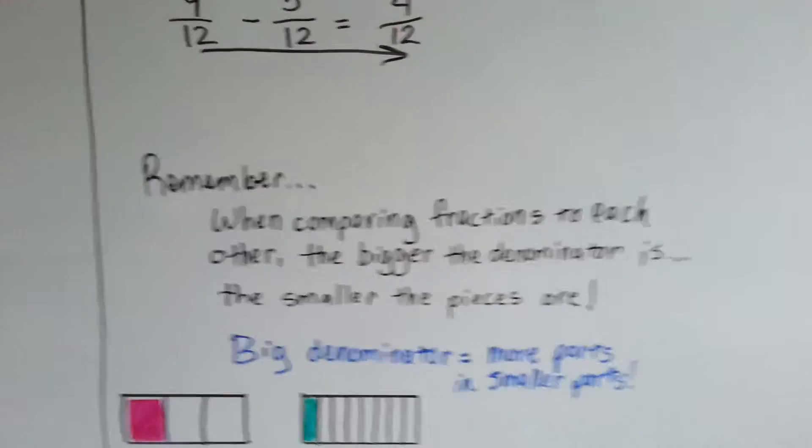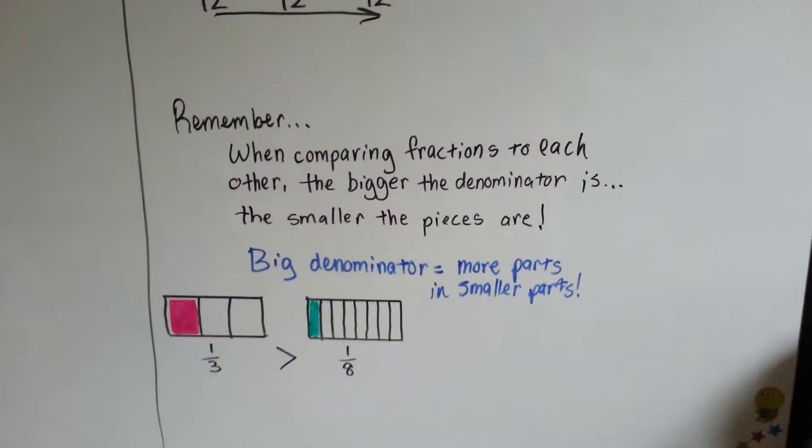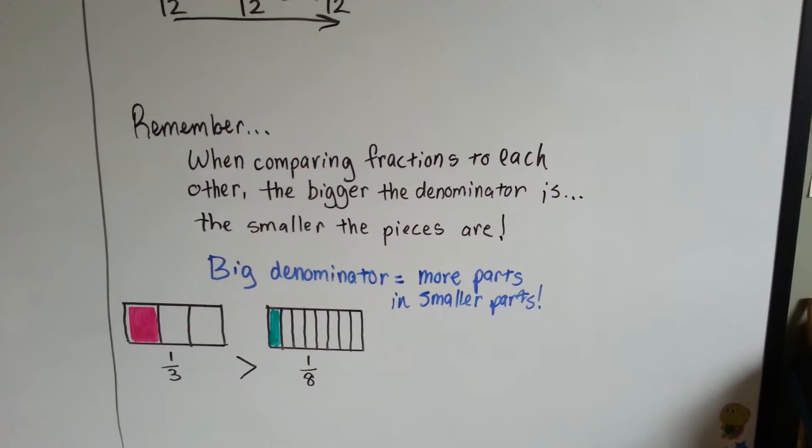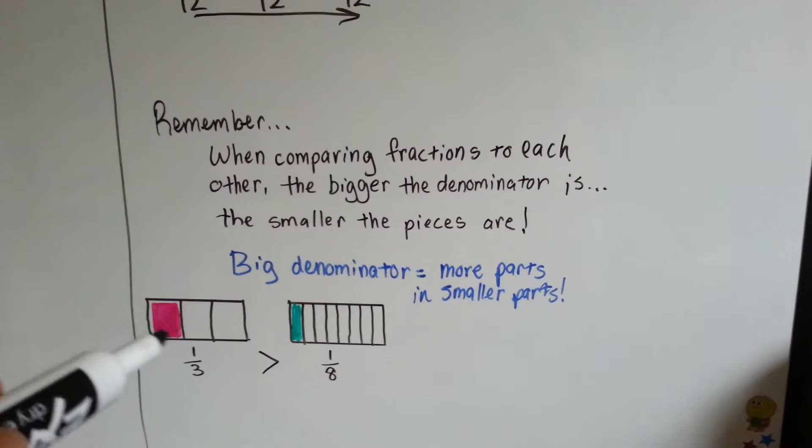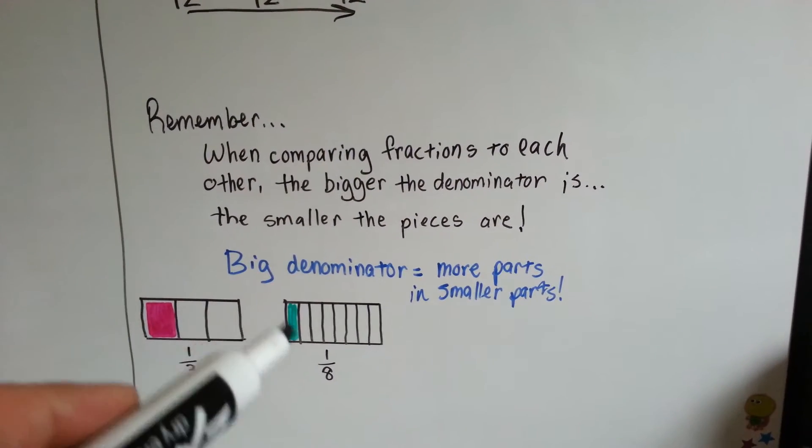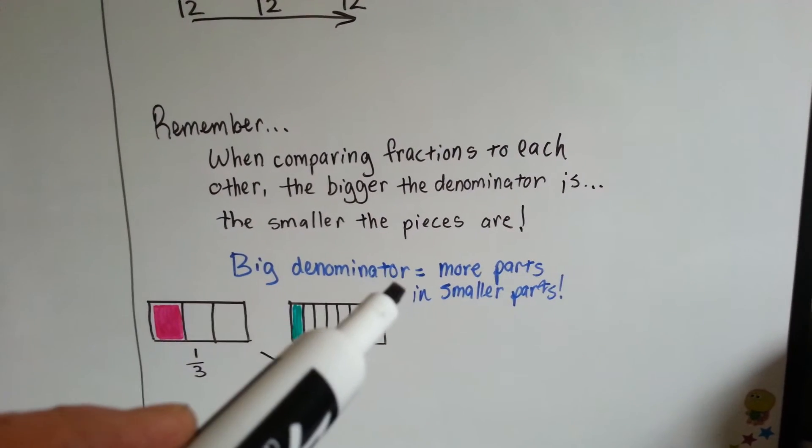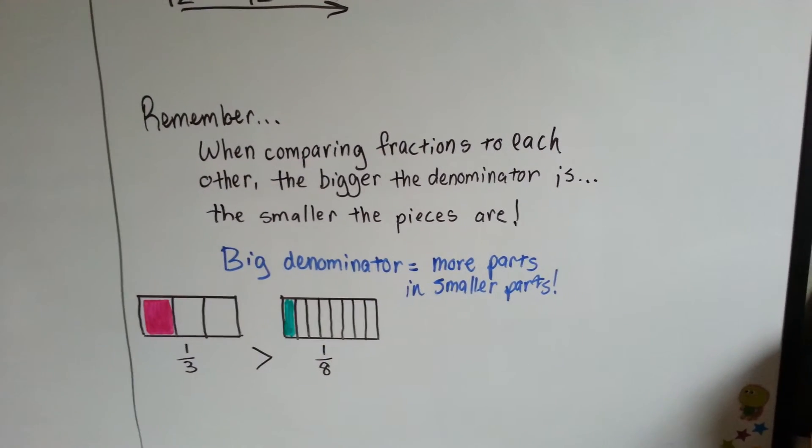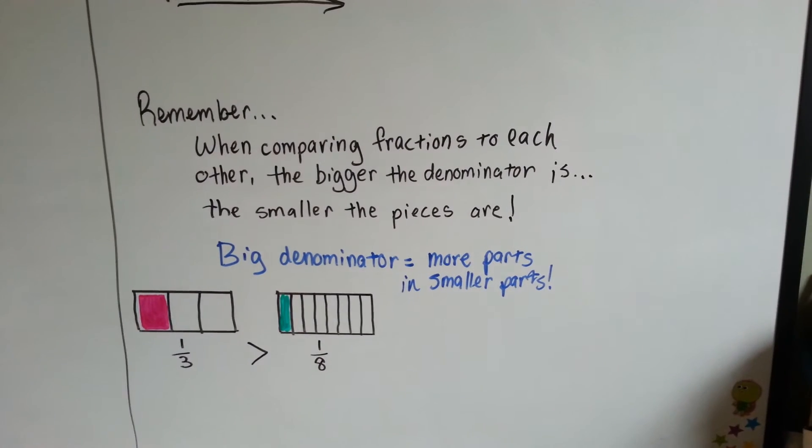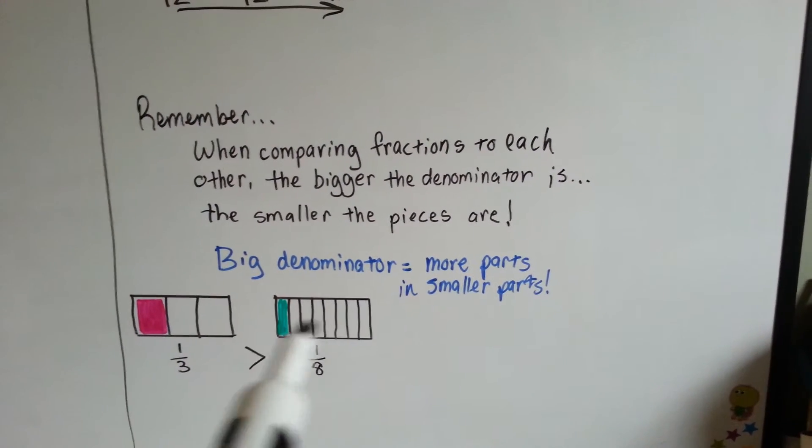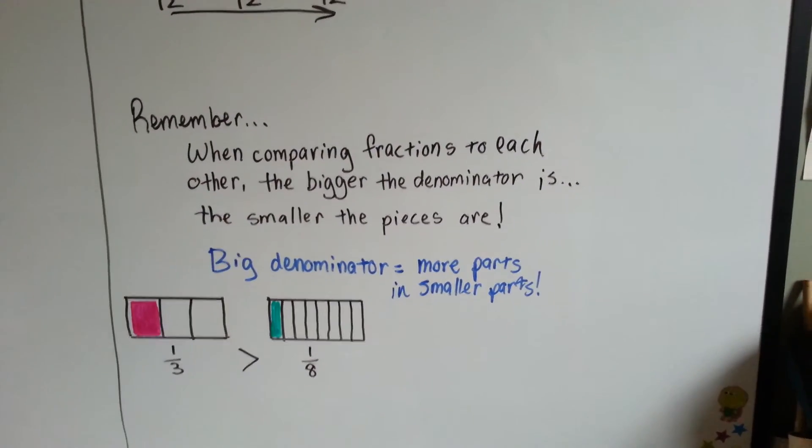So, remember, when you're comparing fractions to each other, the bigger the denominator is, the smaller the pieces are. One-third is a lot greater than one-eighth. Big denominator equals more parts in smaller parts. The bigger this denominator gets, the smaller the parts get, and there's more of them.